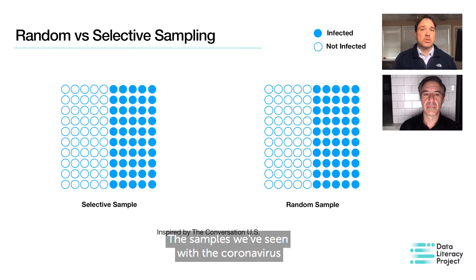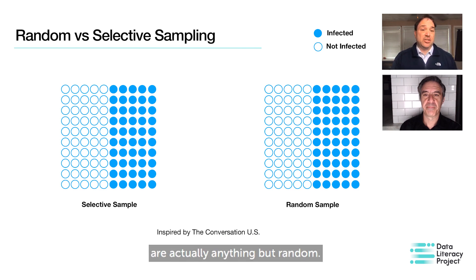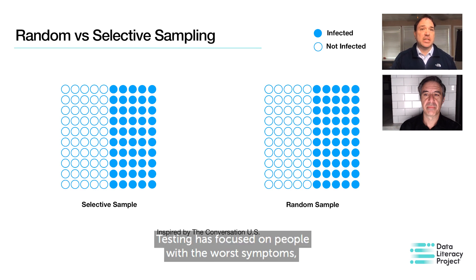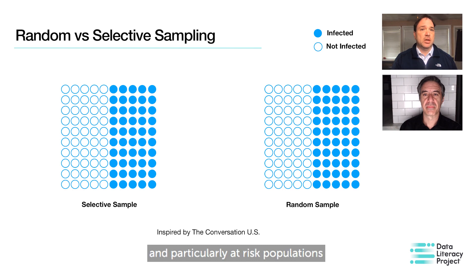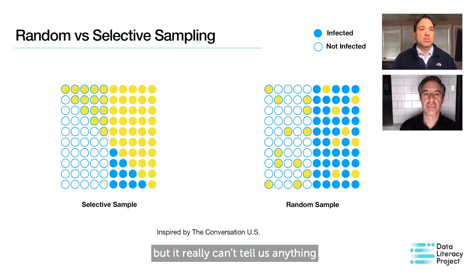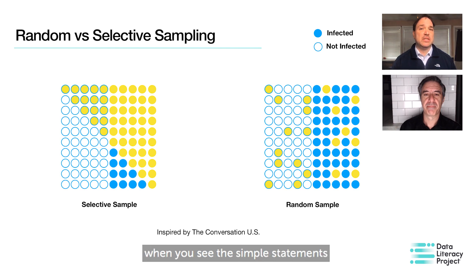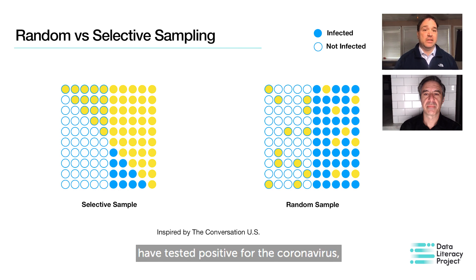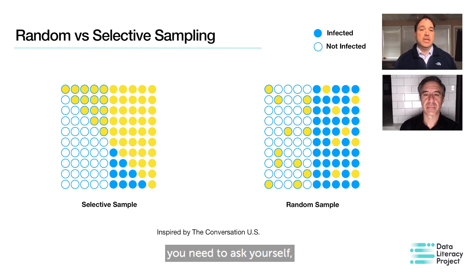The samples we've seen with the coronavirus are actually anything but random. Testing is focused on people with the worst symptoms, then healthcare workers, and particularly at-risk populations and groups like that. We might be learning a lot about those people, but it really can't tell us anything about the public at large. So in the coming weeks, when you see simple statements like 'X percent of the population have tested positive for the coronavirus,' you need to ask yourself: who have they actually tested?